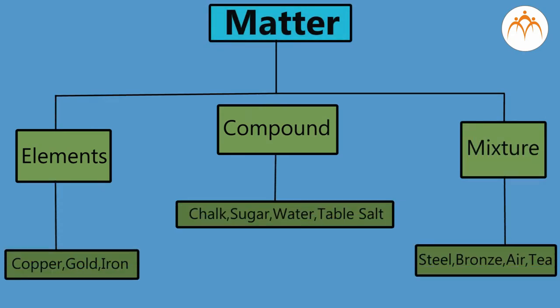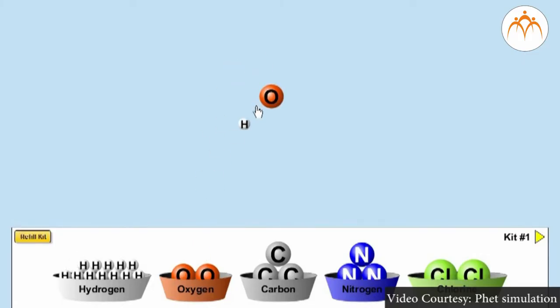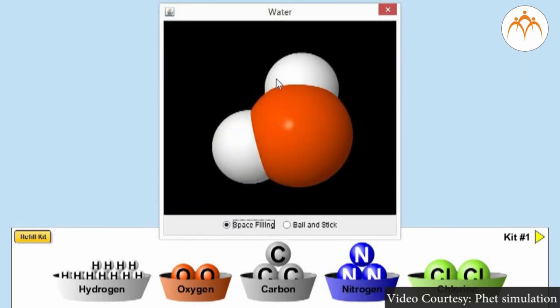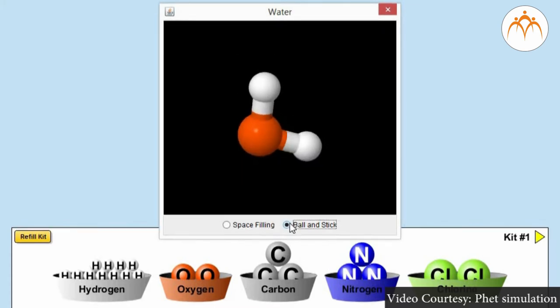Try to form subgroups according to their properties. One possible grouping: copper, gold, and iron are elements; chalk, sugar, water, and table salt are compounds; and steel, bronze, air, and tea are mixtures. So one way of classifying matter is elements, compounds, and mixtures. Two or more elements chemically combined form a compound, whereas two or more elements or compounds without chemical combination form a mixture.